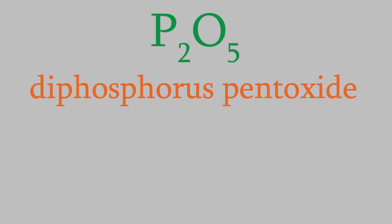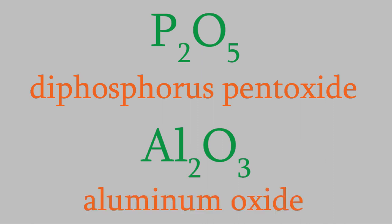Notice that we don't use these prefixes when we're naming ionic compounds. So, for example, this molecule is an ionic compound because it contains a metal, the aluminum. So the name of this compound is just aluminum oxide. We only use the prefixes when we have a molecular compound, where all the atoms are nonmetals.